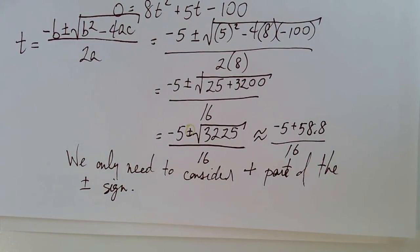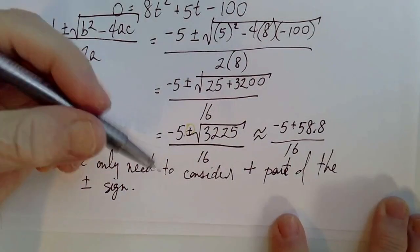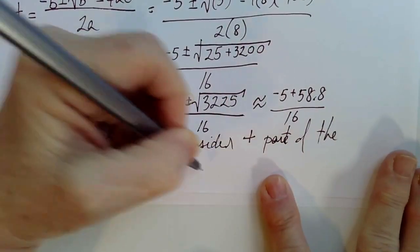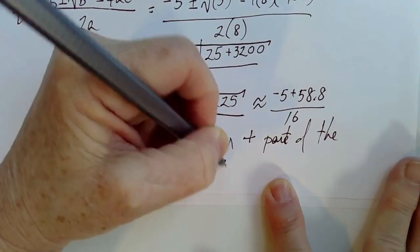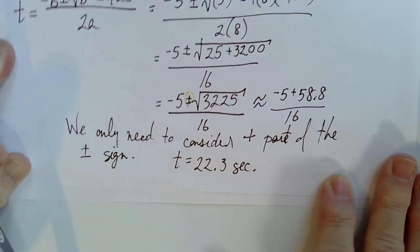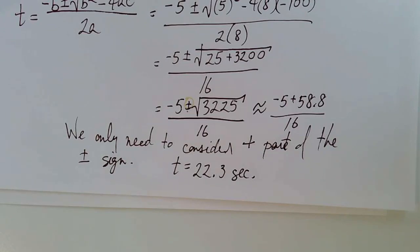And that'll be 51.8 in the numerator. 51.8 divided by 16 is 3.24.